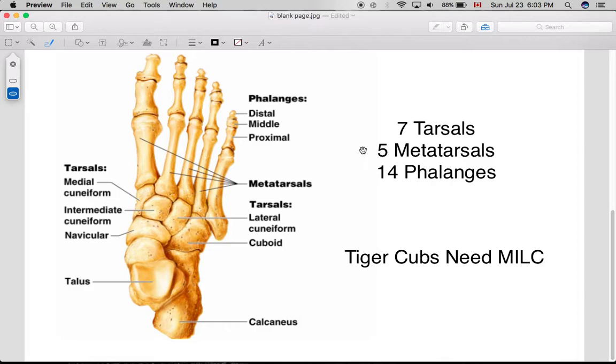And then similar to the hand, there are five metatarsal bones and 14 phalanges, three for each toe, except the big toe, which only has two.